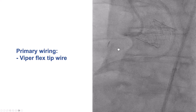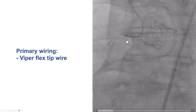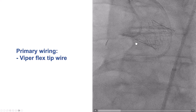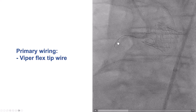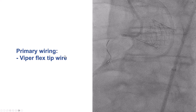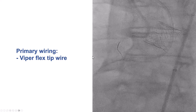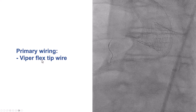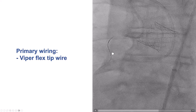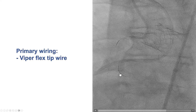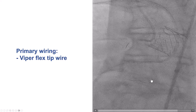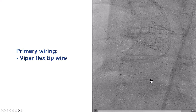To deal with this, we decided to use atherectomy and wired directly through the RCA again using an atherectomy wire. This is the Viperflex tip guide wire, which has very good handling, and we were able to advance it without much difficulty to the distal right coronary artery.